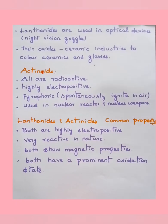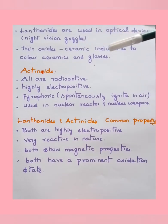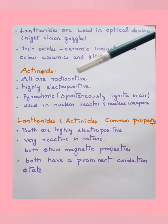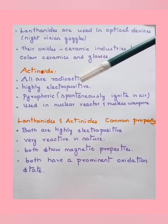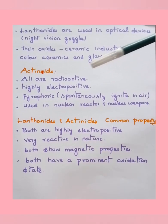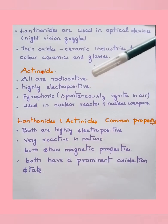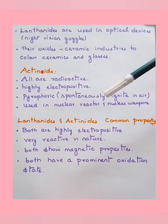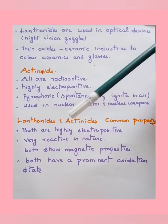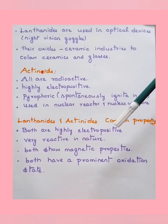Lanthanides are also used in optical devices such as night vision goggles, and their oxides are used in ceramic industries to color ceramics and glasses. Actinides are radioactive and highly electropositive in character. They are pyrophoric, meaning they spontaneously ignite when exposed to air. They are used in nuclear reactors and nuclear weapons. Common properties of both lanthanides and actinides: both are highly electropositive, very reactive, show magnetic properties, and have prominent oxidation states.